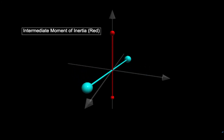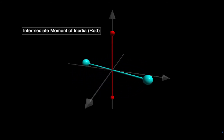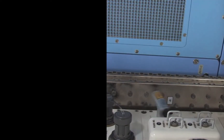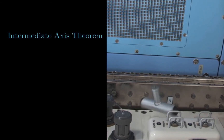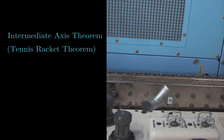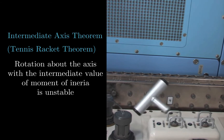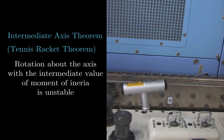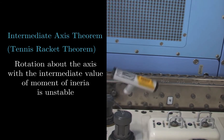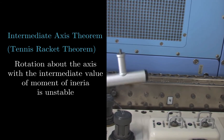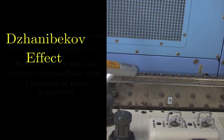The Dzhanibekov effect occurs when we try to rotate the body about this intermediate axis. It's been known for hundreds of years that rotation of a rigid body about its intermediate axis is unstable. This is known as the intermediate axis theorem, also called the tennis racket theorem. But the intermediate axis theorem only tells us that rotation about the intermediate axis is unstable — it doesn't tell us anything about the long-term behavior of the body. As you can see, the long-term behavior is quite surprising. This is what we call the Dzhanibekov effect.